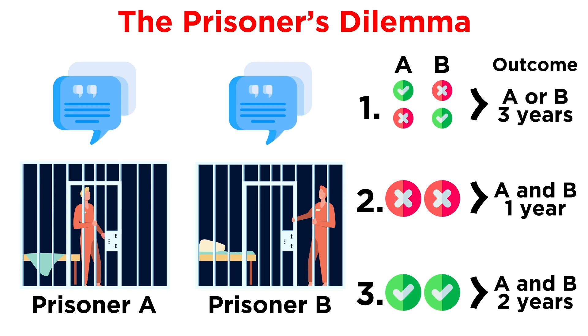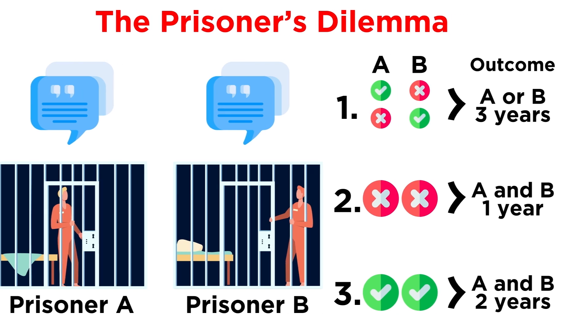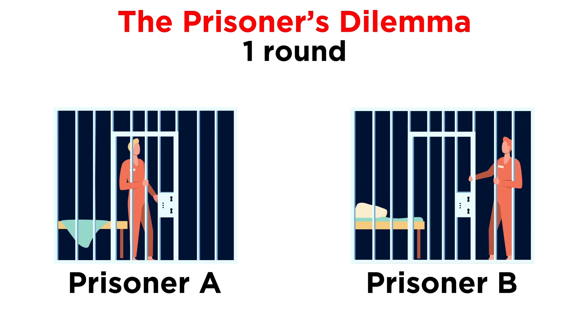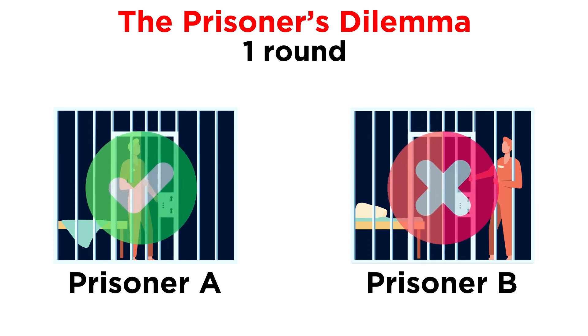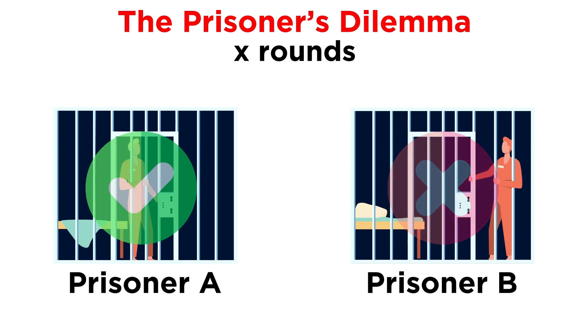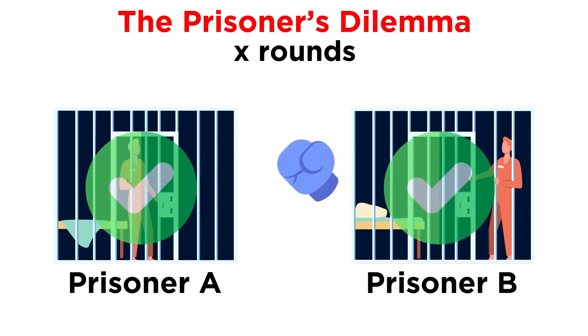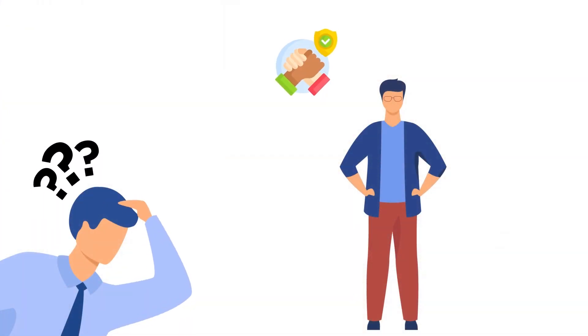By asking participants what they would do as prisoner A, we can start to learn about what sorts of things affect cooperation. In the classic version of the dilemma where only one round is played, the rational decision is for prisoner A to betray prisoner B. But doing things like adding additional rounds changes the equation, since now prisoner B can retaliate against prisoner A for the betrayal. Other situations like changing the length of the prison sentences, or even scarcity of resources, can also impact the decisions made. Making these decisions on whether to cooperate or not depends on us making judgments about the other person. Is our partner trustworthy, or do we think that they may betray us?